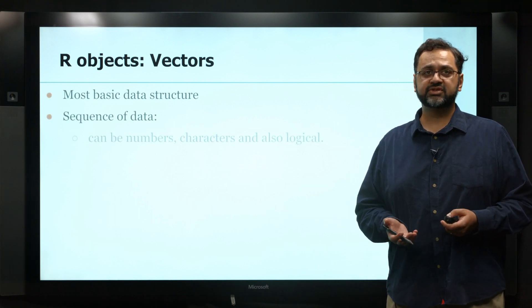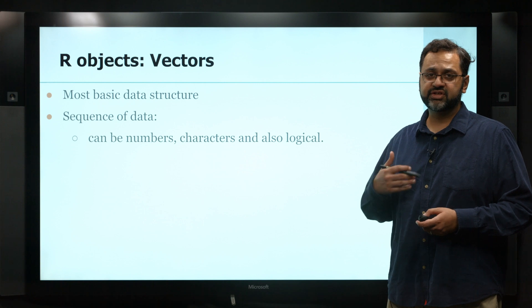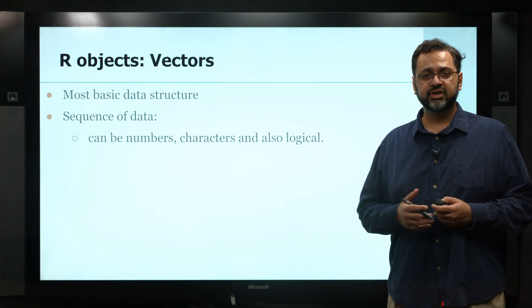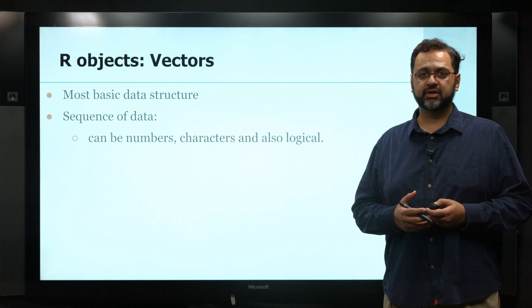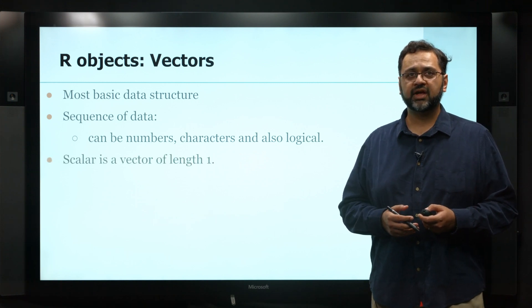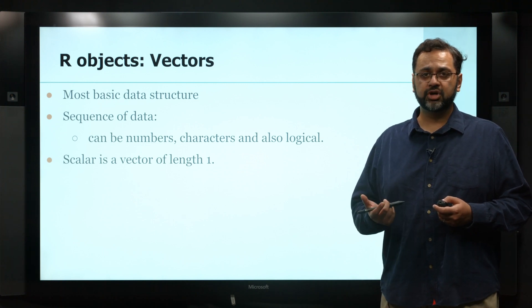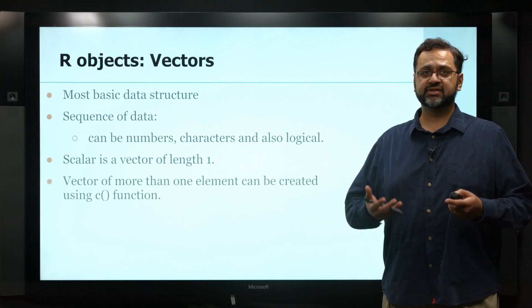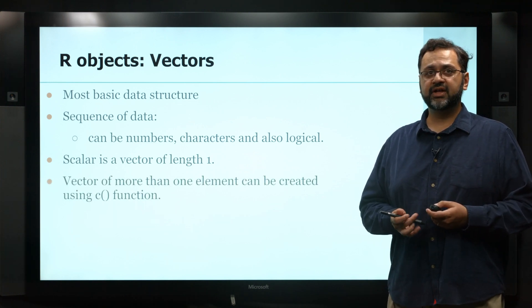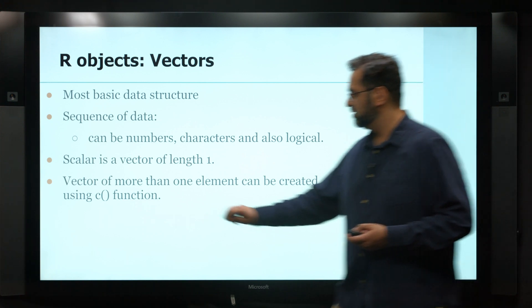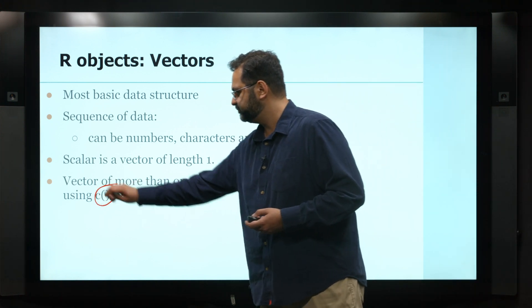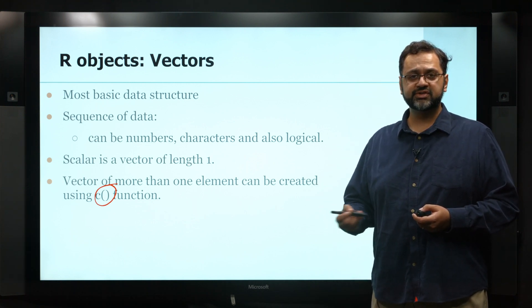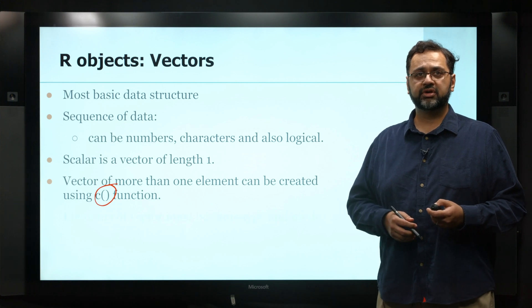A vector is essentially a sequence of data - it can be a series of numbers, characters, or logical values. Those are the three different modes we'll be working with in the course. If you just have one word, it's basically a vector of length one. There's nothing that is of no length. You can create a vector by using the C function - you provide it with all the arguments or values you want to store in a vector.